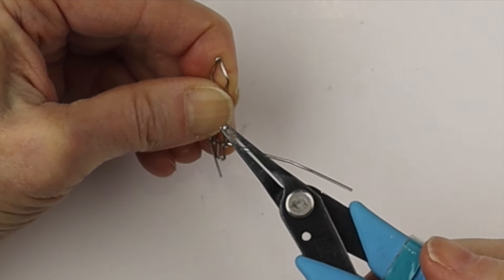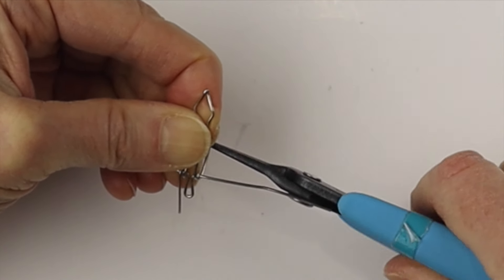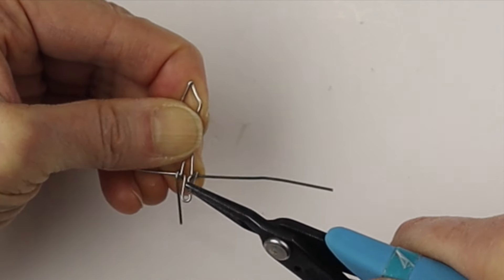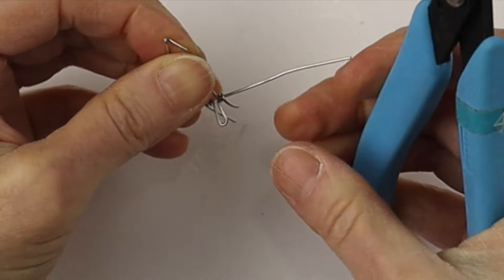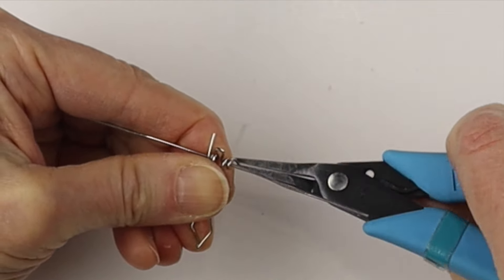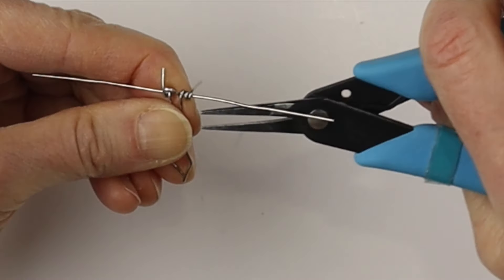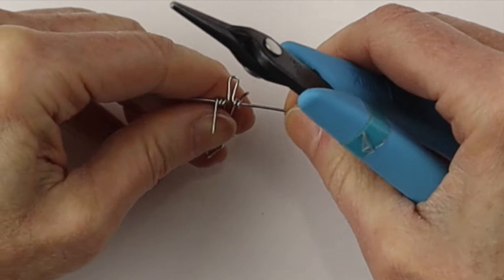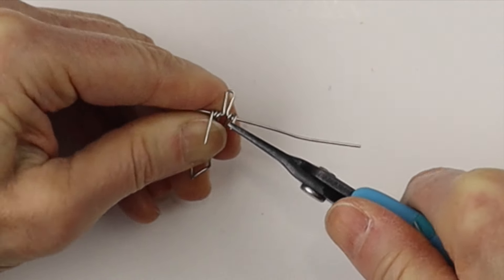So grab that end with the flat pliers and bring it right around and you'll be able to wind it around two or three times. We want to make it even on both sides, so just keep flipping it back and forth and curve it around as many times as you like.